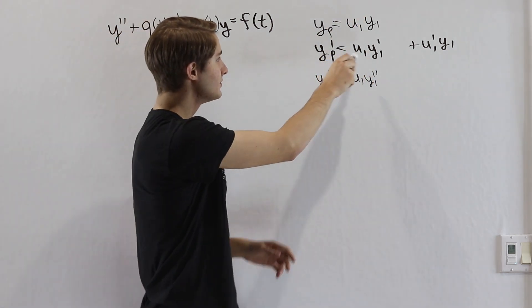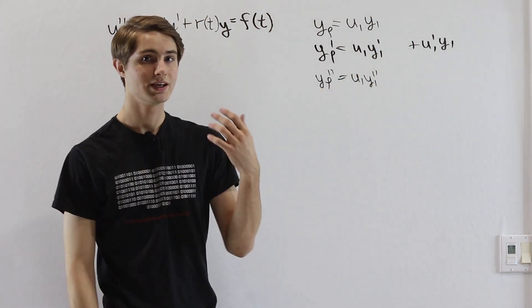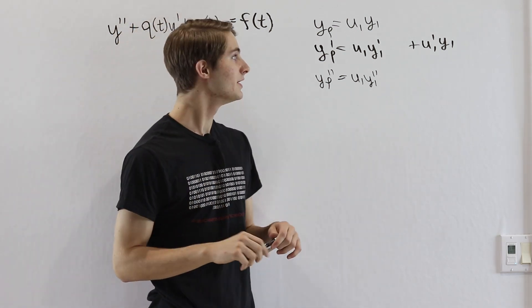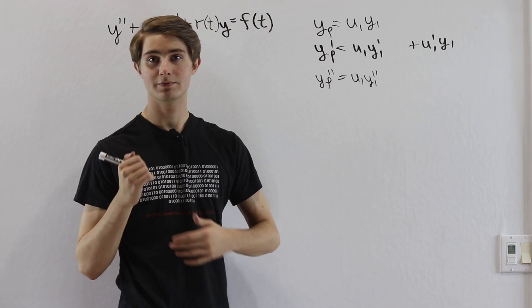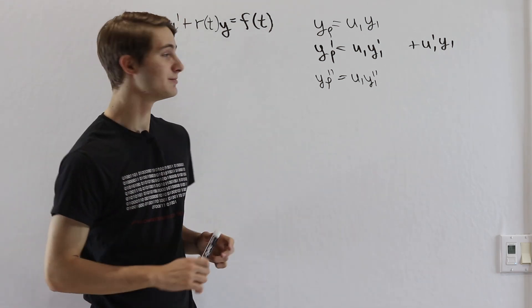The issue here is that we've differentiated and got this u1 prime, and then when we differentiate again, we're going to get u1 double prime, which is a little bit annoying. We'd rather not have that. In order to do that, we're going to play a little trick that might seem kind of strange at first, but we'll see why it's important in a second.